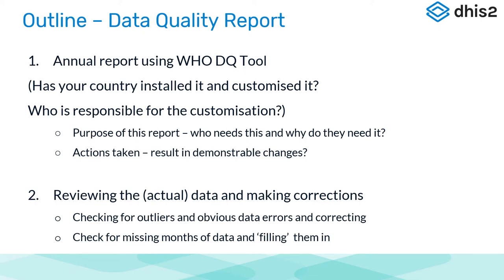The second aspect of this data quality review is to look at the data and to fix it. It's about checking for outliers for obvious data errors and then correcting them, checking for missing months of data and filling them in — specifically if you know a facility has worked but no pieces of paper have arrived.